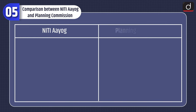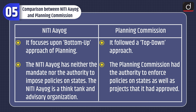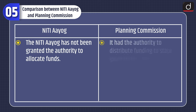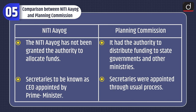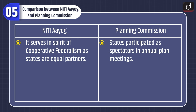Now, comparison between NITI Aayog and Planning Commission. NITI Aayog focuses on a bottom-up approach of planning, while Planning Commission followed a top-down approach. NITI Aayog has neither the mandate nor the authority to impose policies on states; it is a think tank and advisory organization, while the Planning Commission had the authority to enforce policies on states and projects it had approved. NITI Aayog has not been granted the authority to allocate funds, whereas Planning Commission had the authority to distribute funding to state governments and other ministries. The CEO of NITI Aayog is appointed by the Prime Minister, while secretaries in the Planning Commission were appointed through the usual process. NITI Aayog serves in the spirit of cooperative federalism where states are equal partners, while in the Planning Commission, states participated as spectators in annual plan meetings.